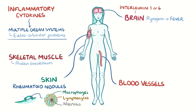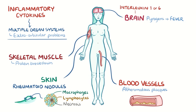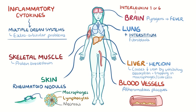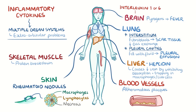Blood vessels can also be affected. Their walls get inflamed, resulting in various forms of vasculitis, and make them prone to developing atheromatous, or fibrofatty, plaques. In response to inflammatory cytokines, the liver also starts producing high amounts of hepcidin, a protein that decreases serum iron levels by inhibiting its absorption by the gut and trapping it into macrophages or liver cells. Meanwhile, within the lung interstitium, fibroblasts get activated and proliferate, causing fibrotic or scar tissue that makes it harder for alveolar gas exchange. Also, the pleural cavities surrounding the lungs can get inflamed and fill up with fluid, known as pleural effusion, which can sometimes interfere with lung expansion.